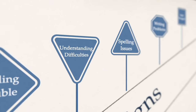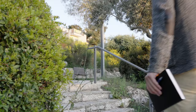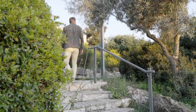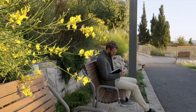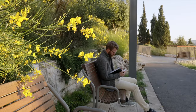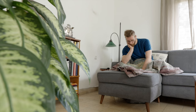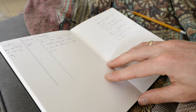Now moving on to signs that relate to writing. One of those areas would be spelling issues — you might make a lot of spelling mistakes, adding or leaving out letters that need to be in a certain word. Other signs relate to writing problems: you might make a lot of grammar and punctuation mistakes, or you might have general trouble organizing your ideas into writing.